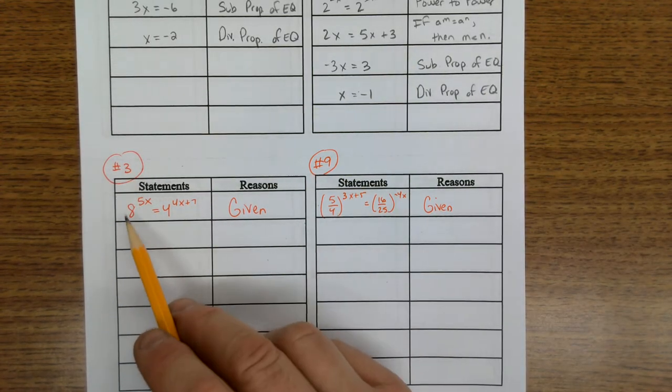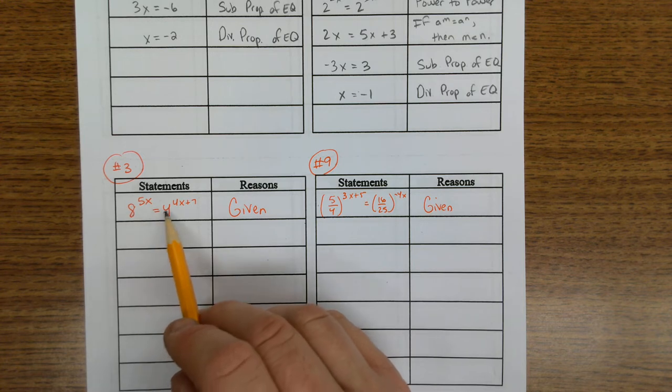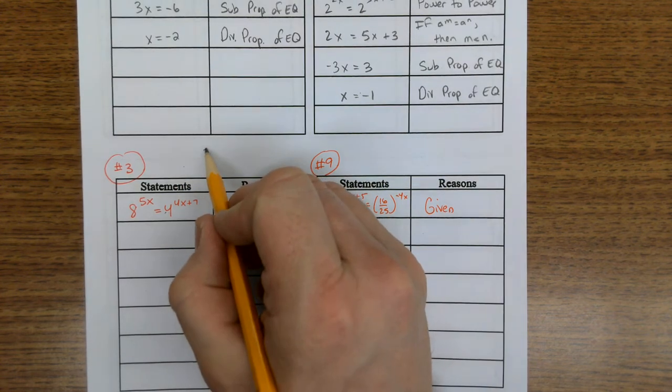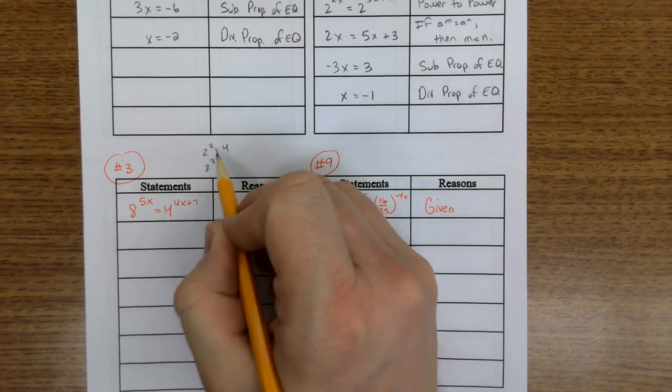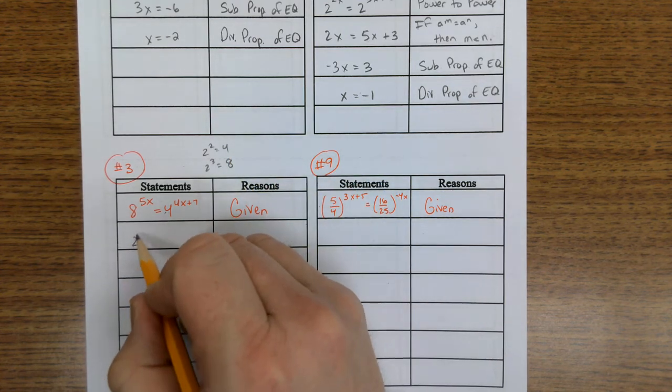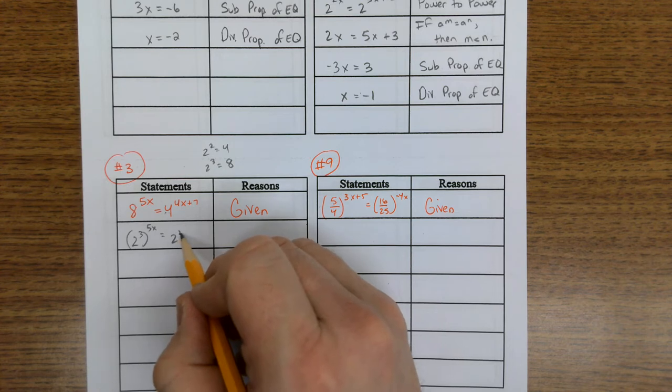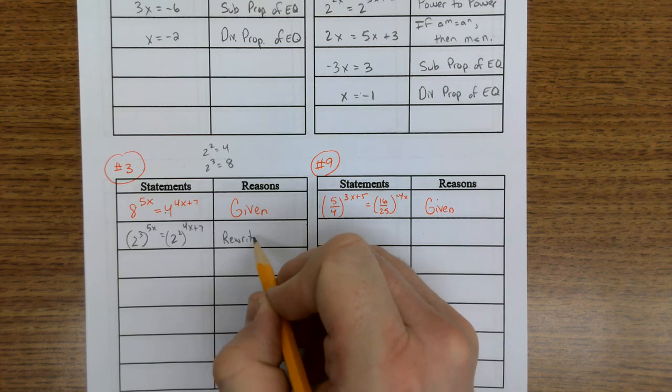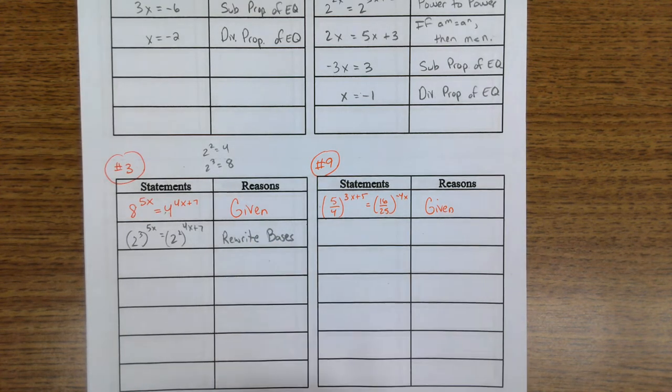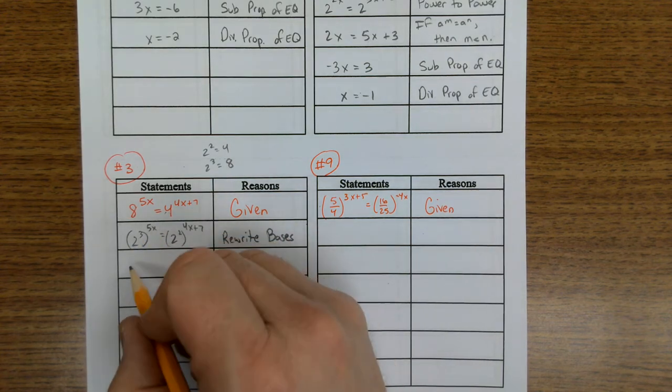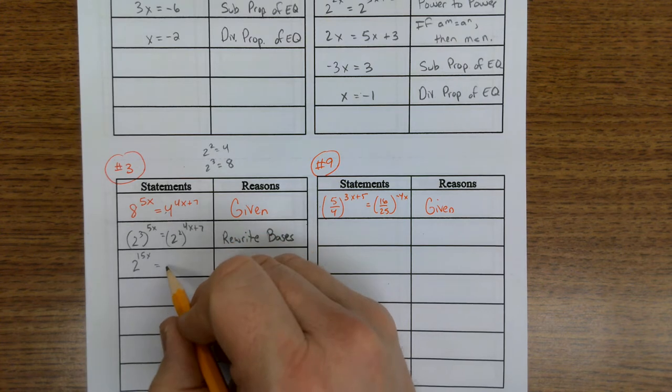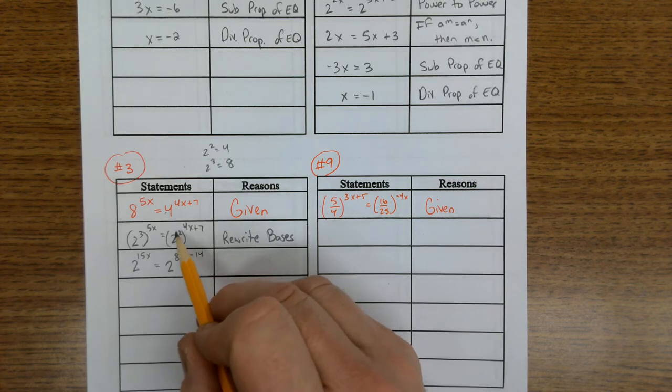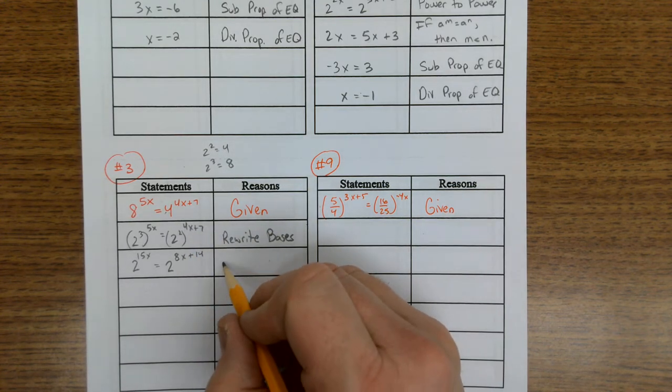On number 3, same thing. We don't have matching bases. I can't change a 4 and an 8 into each other, but they're both powers of 2. 2 to the second is 4 and 2 to the third is 8. So on the left, I'm going to rewrite it as 2 to the third, and on the right, I'm going to leave it as 2 to the second. Rewrite bases. I can multiply this using power to power. This is 2 to the 15x, and this is 2 to the 8x plus 14. Don't forget that if you distribute, you multiply everything here. We did the power to power again.